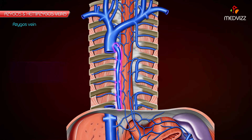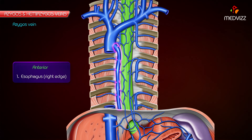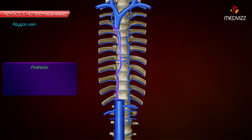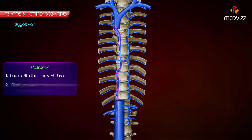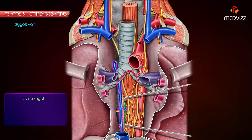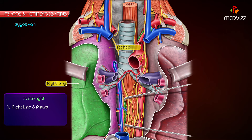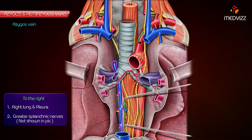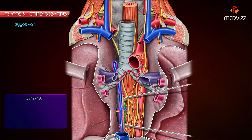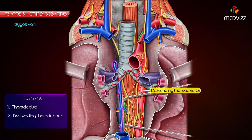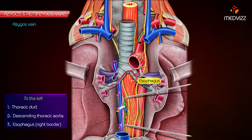Relations. Anteriorly, it is related to the right edge of the oesophagus. Posteriorly, the lower 8 thoracic vertebrae and right posterior intercostal arteries. To the right, the right lung and pleura and the greater splanchnic nerves. To the left, the thoracic duct, descending thoracic aorta, and the right border of the oesophagus.